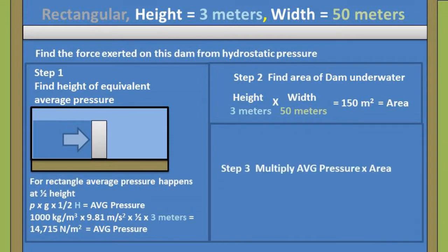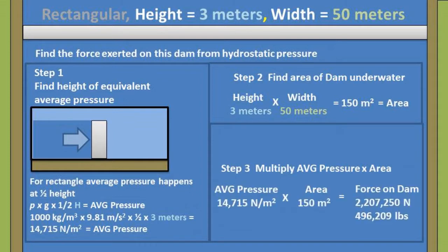The final step of this problem is to take the average pressure times the area underwater to get the force acting on the dam from the hydrostatic pressure. In this example, we have 2,207,250 newtons of force on this dam. This is equivalent to 496,209 pounds for those of you who think in imperial.